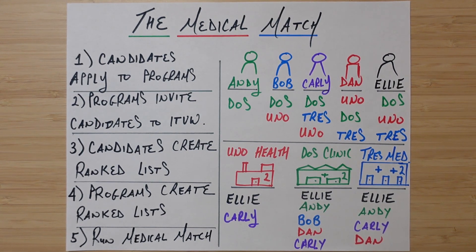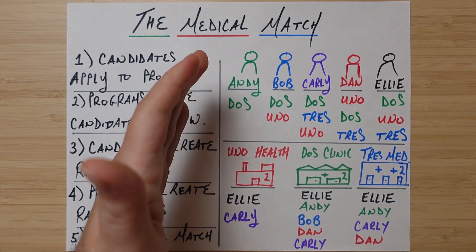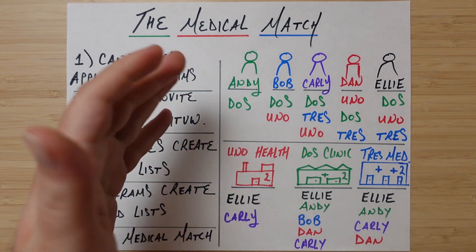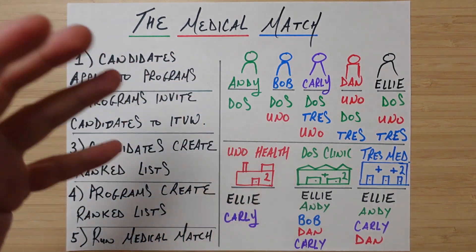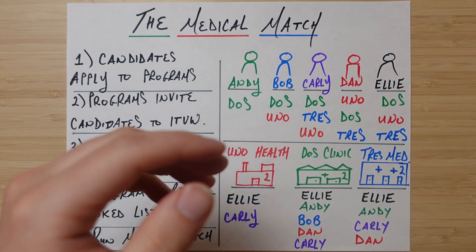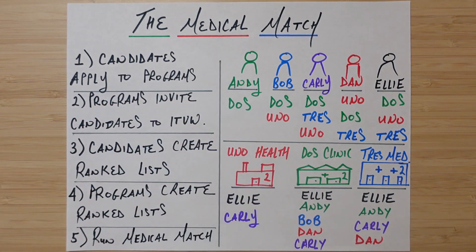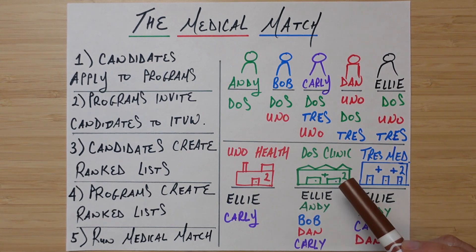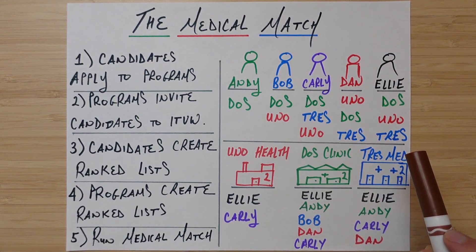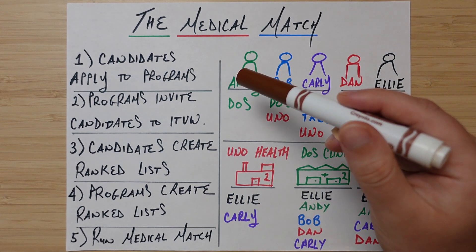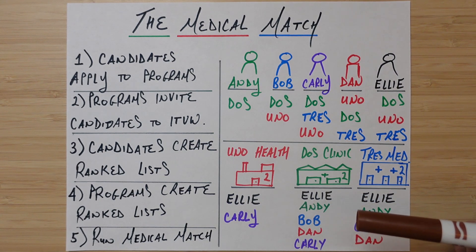Once we have those ranked lists, we run the medical matching algorithm — the magic that figures out, based on ranked lists from either side, which student should go to which residency program. Let's see how that works and why it has favorable properties. We start with the candidate side, starting with Andy. Andy says his first choice is Dose Clinic — it's his only choice. First, we check if Dose Clinic actually wants Andy at all, because if he's not in their list, he cannot go there.